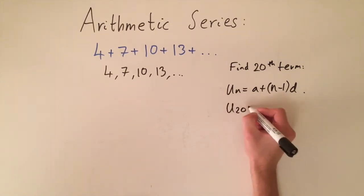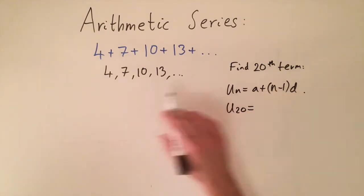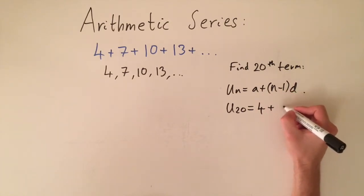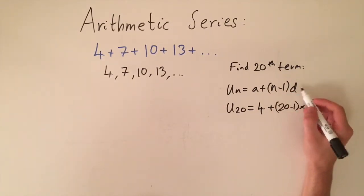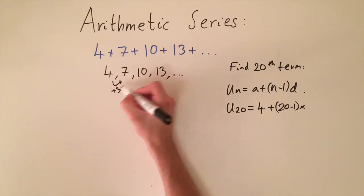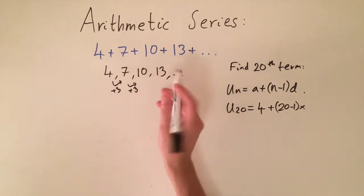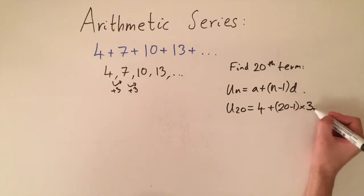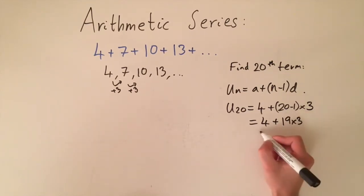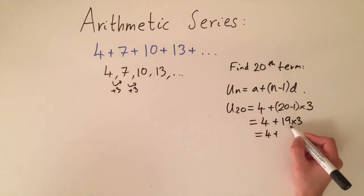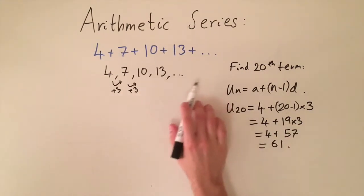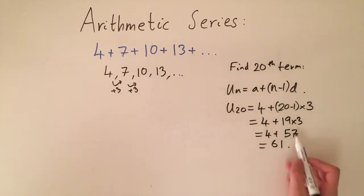The formula is u_n = a + (n − 1)d. So u_20 = a + (20 − 1) × d. Here a is the first term, which is four, and d is the common difference, which is three. So we get four plus 19 times three, which is four plus 57, giving us 61. If we were to carry on the sequence to the 20th term, we would find the number 61.